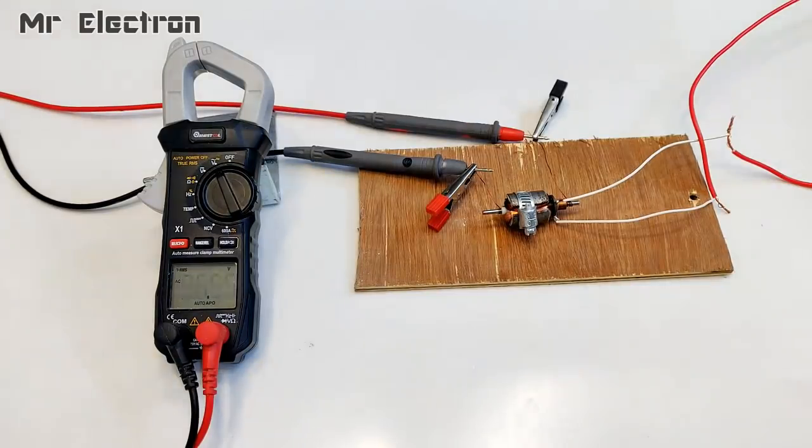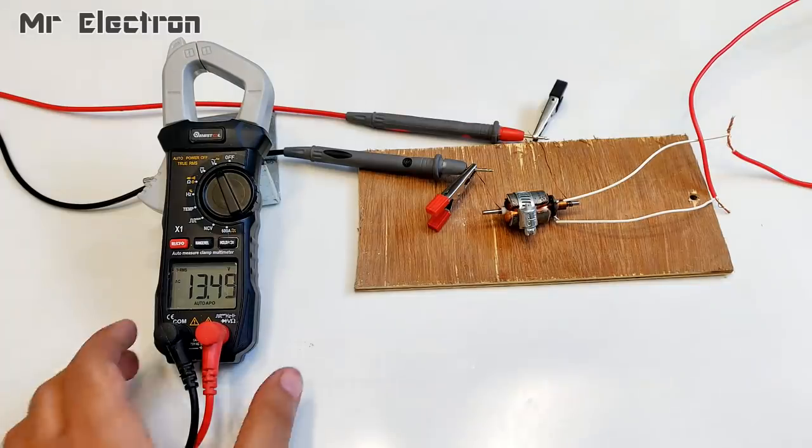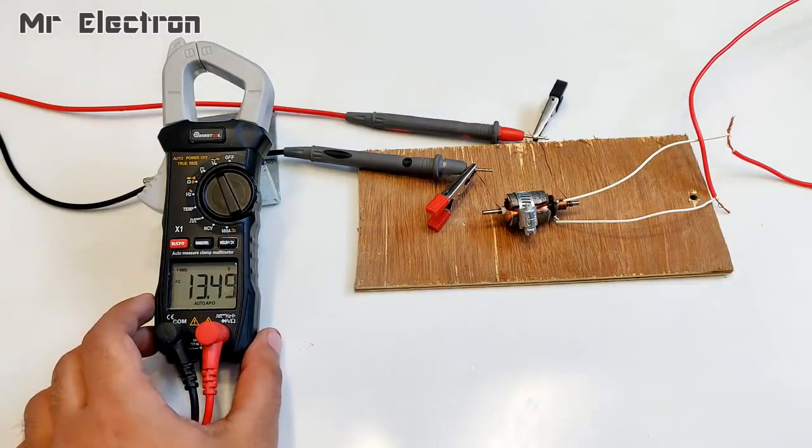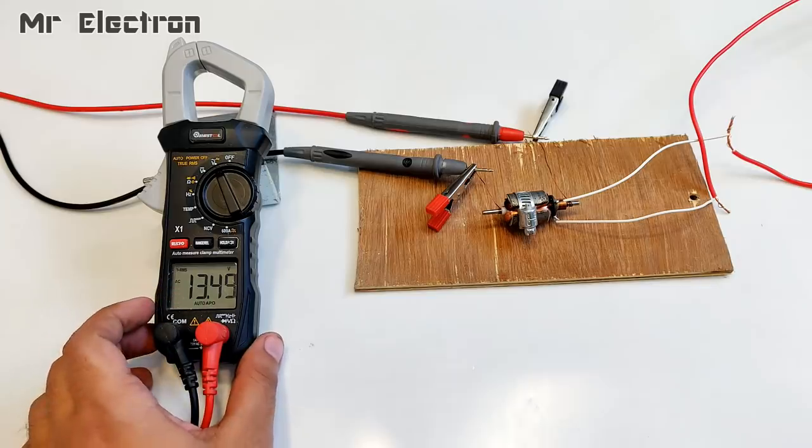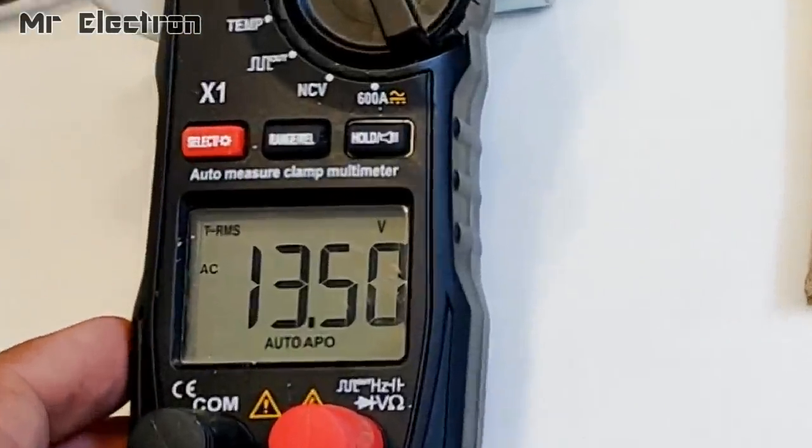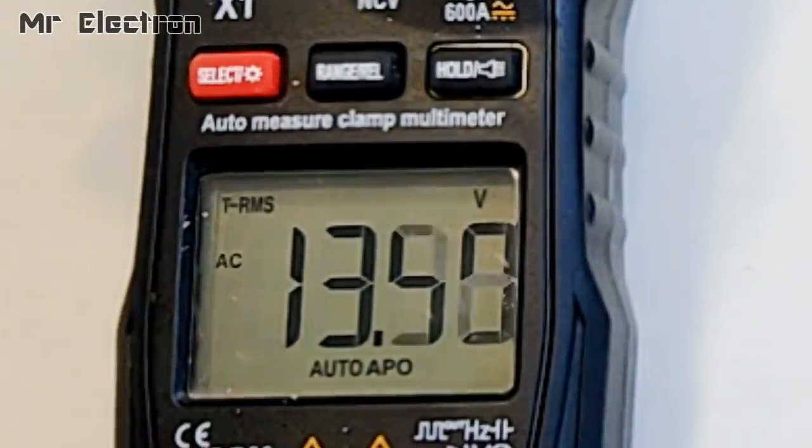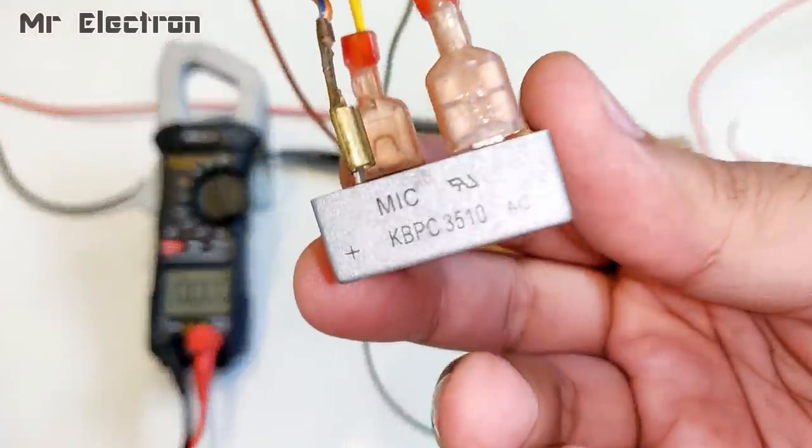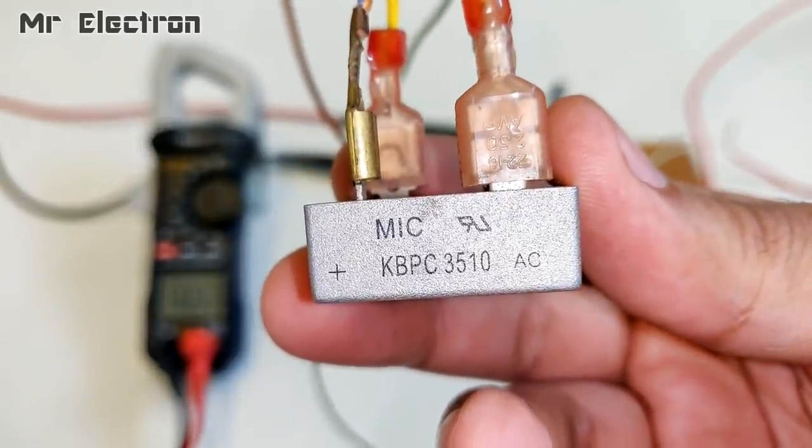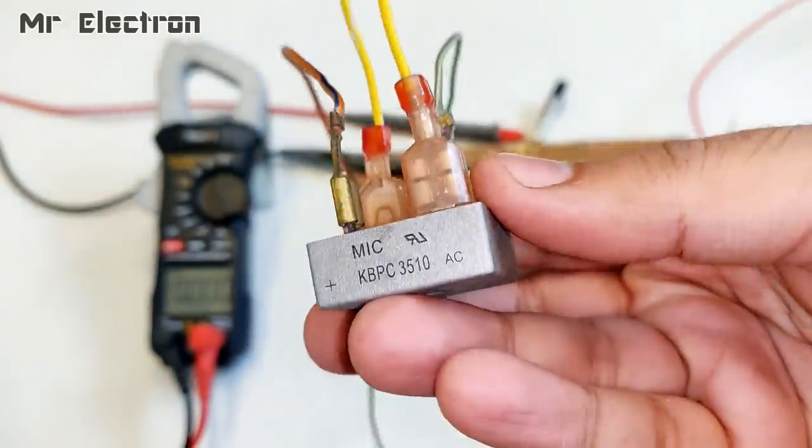You see that it is showing somewhere around 13.5 volts AC. Well I actually hoped for 12 volts, because when I'm going to connect a bridge rectifier, the voltage is going to shoot to somewhere around 18 or 19 volts.